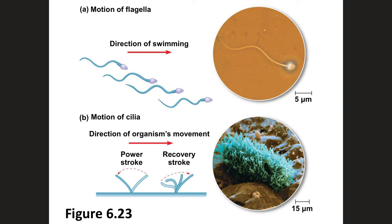Cell movement can take different forms. Crawling is accomplished via actin filaments and the protein myosin. Flagella undulate to move a cell. Cilia can be arranged in rows on the surface of a eukaryotic cell to propel it forward. The cilia and flagella of eukaryotic cells have a similar structure — nine pairs of microtubules surrounded by two central microtubules, a nine-plus-two structure. Cilia are usually more numerous than flagella on a cell.